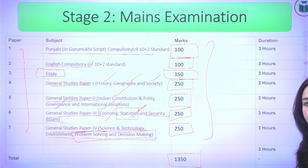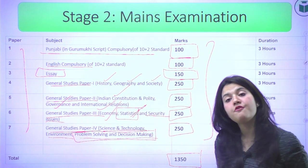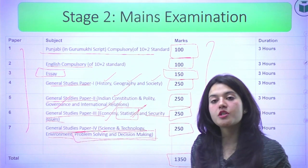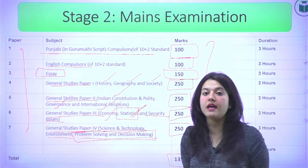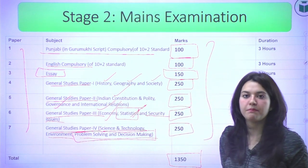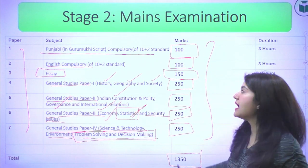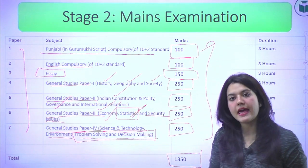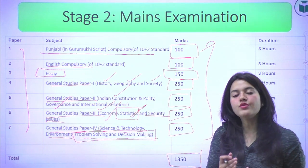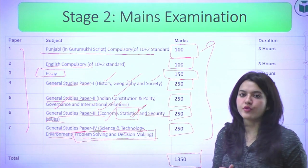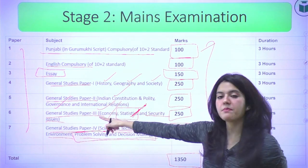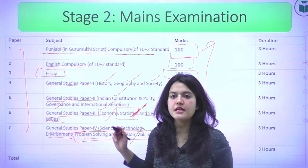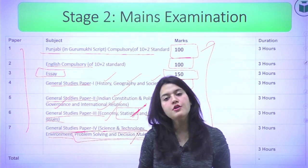The total marks for the mains examination are 1350. Statistics are covered in GS paper 3, and Problem Solving and Decision Making come under GS paper 4. The next session will cover details of what to study for prelims and mains, along with reference books.